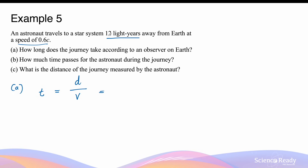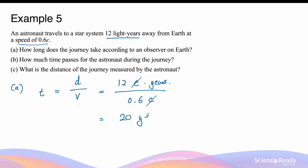The distance is given in light years, meaning it takes light 12 years to travel this distance, so we can write it as 12 times c times years. Because of this, dividing by the velocity expressed in terms of c causes the c in light years to cancel with the c in the velocity. So we have 12 divided by 0.6, giving 20 years as the final answer.